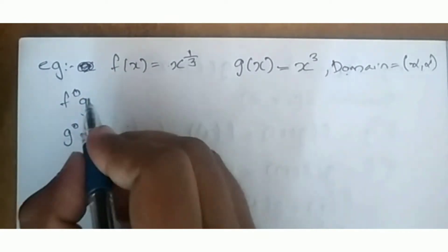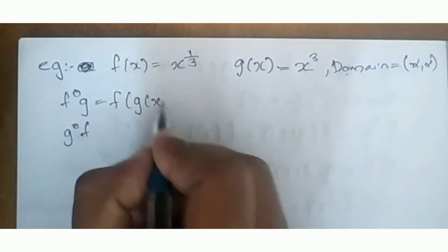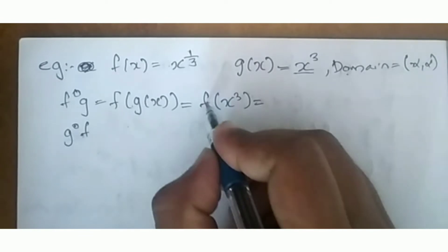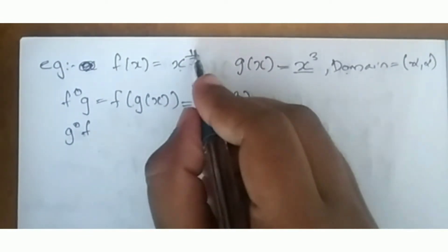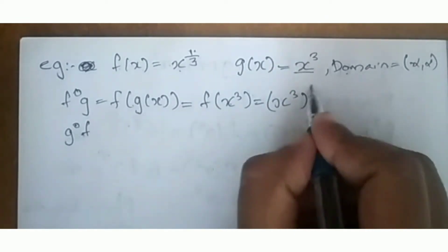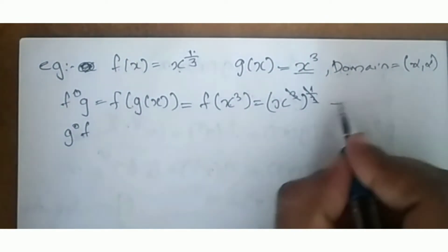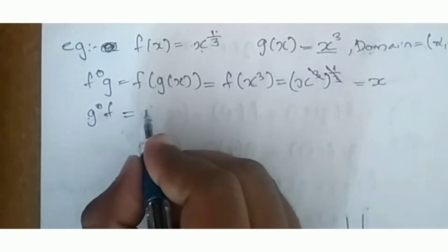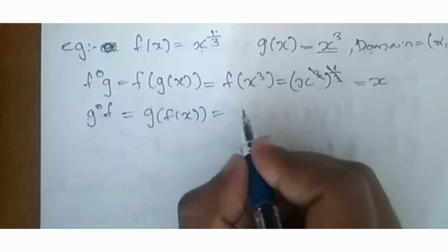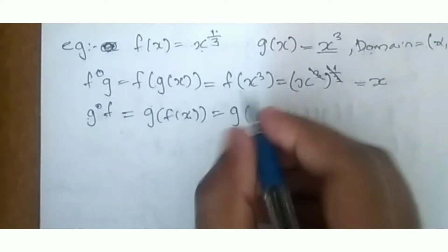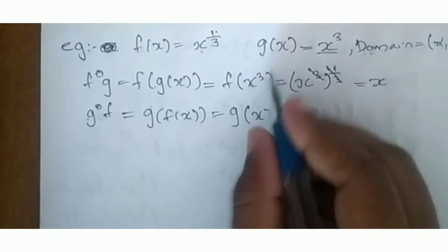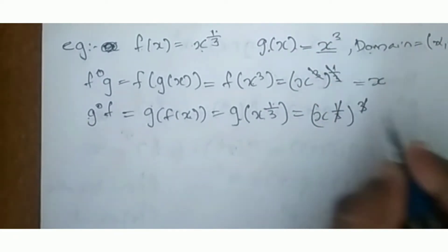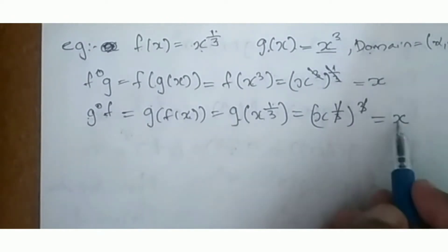We have to compute f composite g and g composite f. For f composite g, it is f of g of x. Since g of x is x cubed, we get f of x cubed, which is x cubed raised to 1 by 3. The cube root gives us x. Similarly for g composite f, f of x is x raised to 1 by 3, and then g gives x cubed raised to 1 by 3, and the answer is also x.